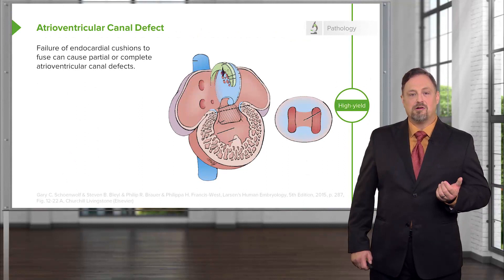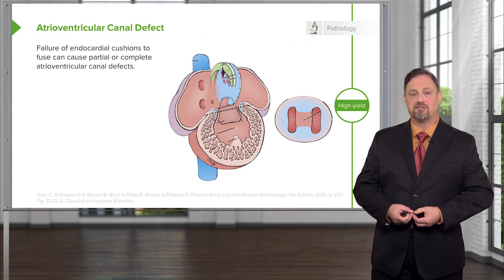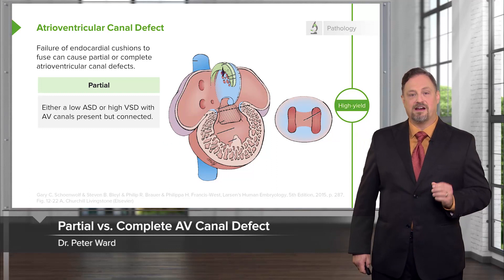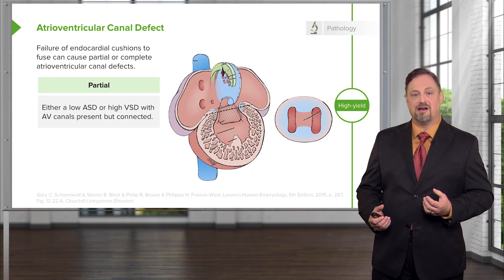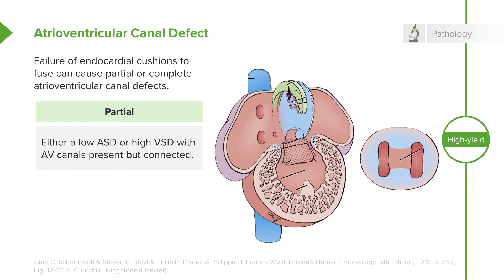What can go wrong in this process? If your atrioventricular canal does not close completely, you have an atrioventricular canal defect. A partial defect means incomplete closure of the right and left atrioventricular canals. This is usually associated with an ostium primum defect of the atrium, because the cushions didn't close and therefore didn't shut the ostium primum between the two atria. It can also be associated with a ventricular septal defect on the lower side.